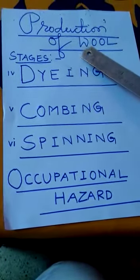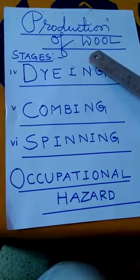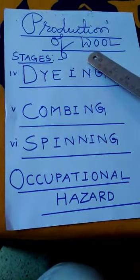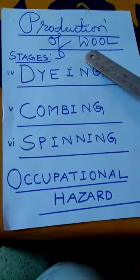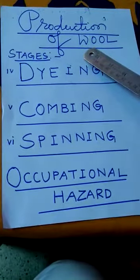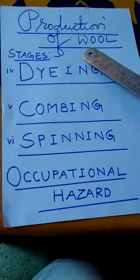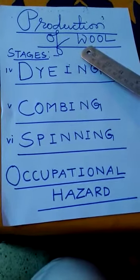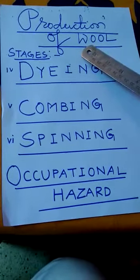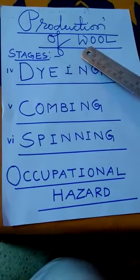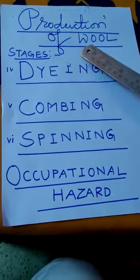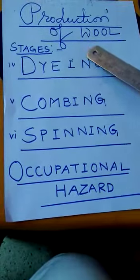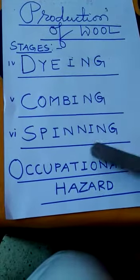Today, I will tell you about the remaining three stages in the production of wool. They are dyeing, combing, and spinning.